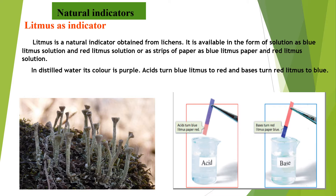Broadly, we can classify indicators into natural indicators and synthetic indicators. Natural indicators are obtained from nature or natural substances, and synthetic indicators are manufactured in the laboratories.